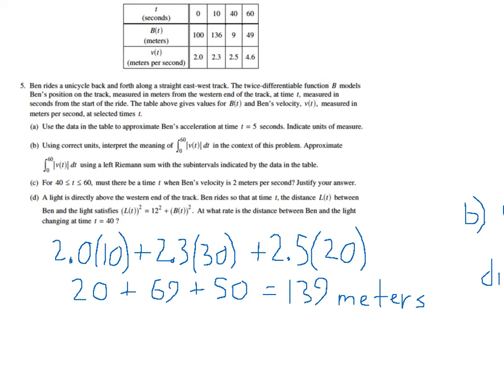And we can also see that the units should be meters because when I take this 2.0, it's 2.0 meters per second times 10 seconds because the length of the interval is in seconds. So I'm going 2.0 meters per second for 10 seconds. That's 20 meters in the first interval. 2.3 meters per second for 30 seconds is 69 meters for the second interval. And then 2.5 meters per second for 20 seconds is 50 meters for the third interval, or a total of 139 meters.